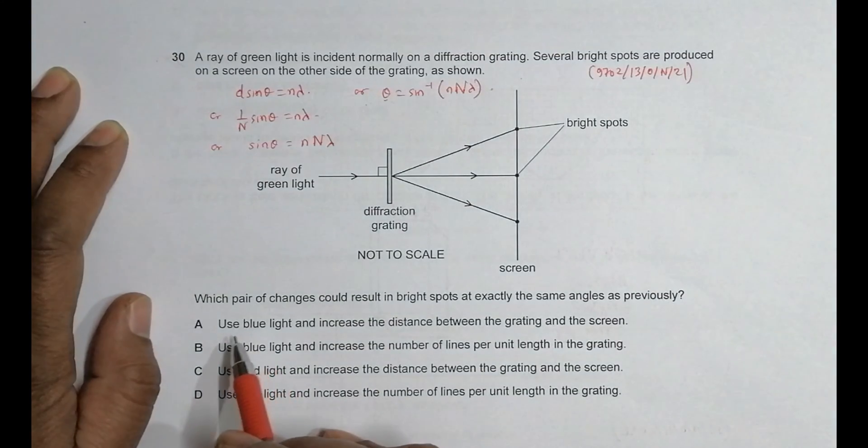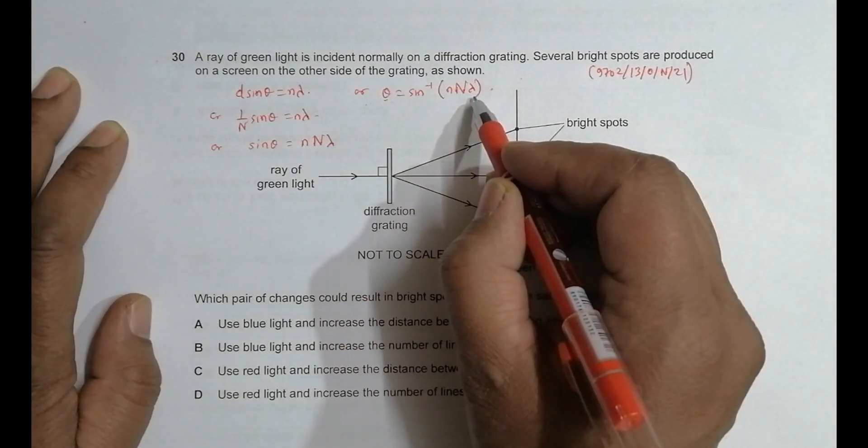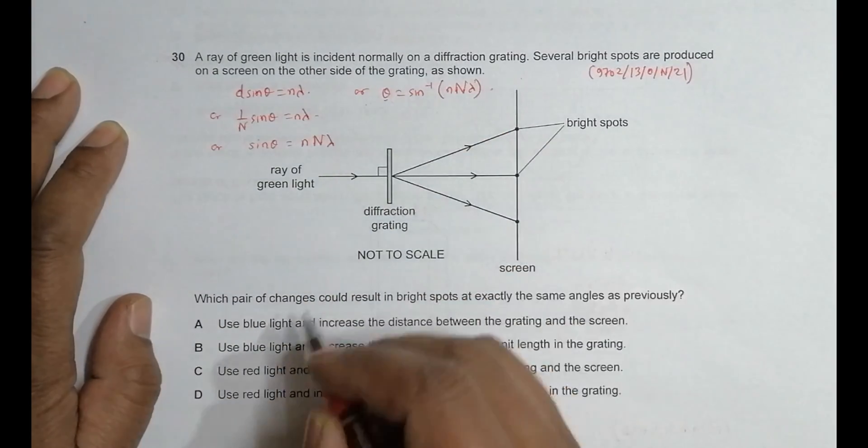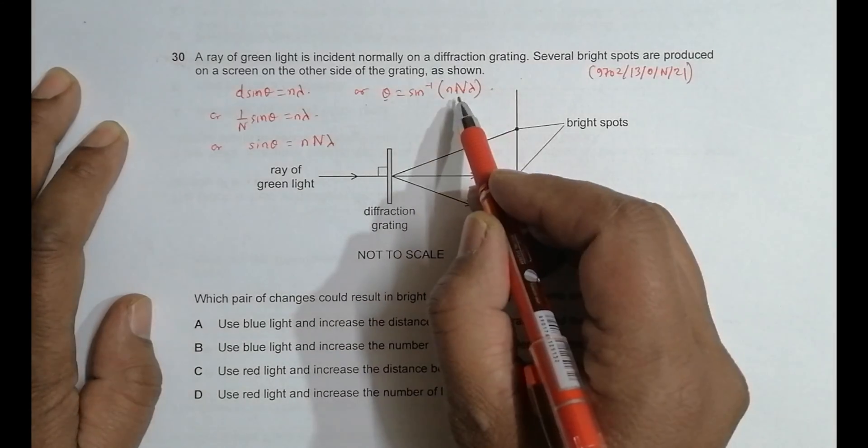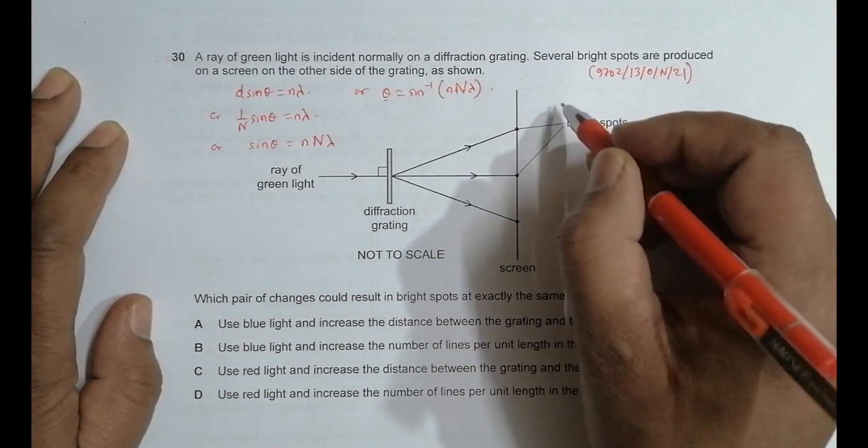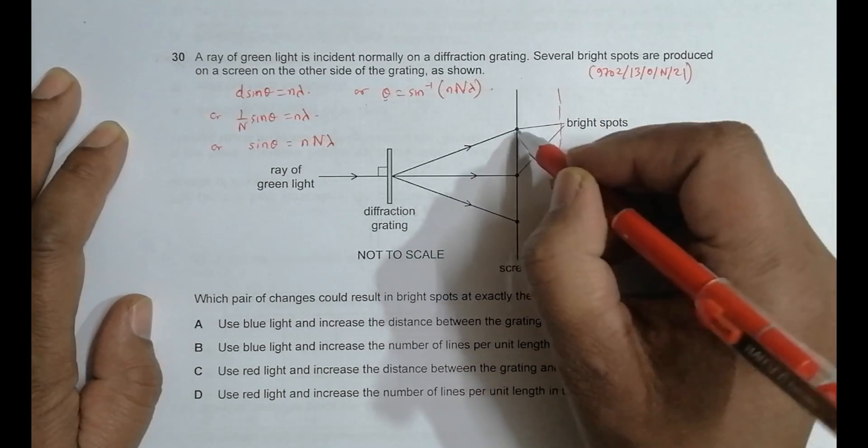So first let us see, use blue light. Use blue light means lambda decreases and increase the distance between. This thing is not involved here. The increase of distance, let us see if I produce the screen here now, this angle does not change.